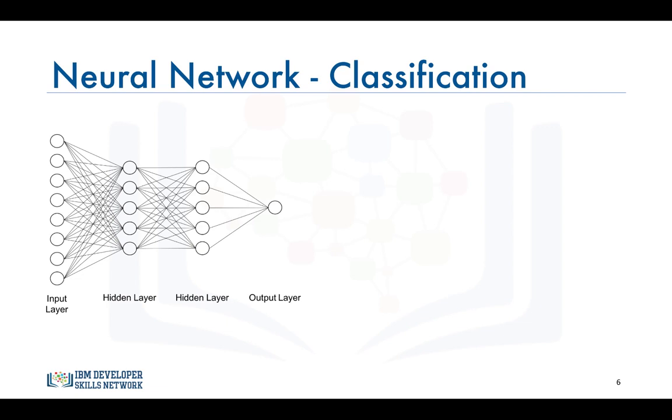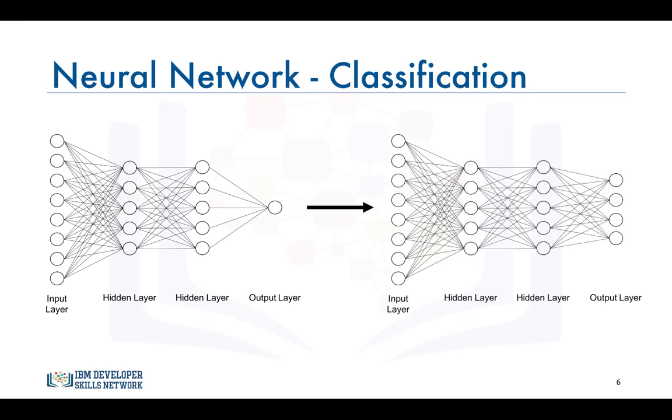In other words our model instead of having just one neuron in the output layer, it would have four neurons since our target variable consists of four categories.